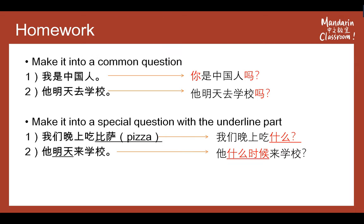Okay, so let's check the homework for the last class. There are two parts. The first mission is to make it into a common question. First one: 我是中国人。 This sentence as a common question will be: 你是中国人吗？ So here you need to change the subject from 我 to 你, and then add 吗 at the end of the sentence. That's the common question.